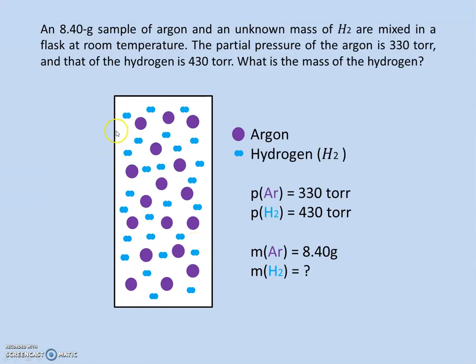Alright, so our task is that we have an 8.4 gram sample of argon and an unknown mass of hydrogen.